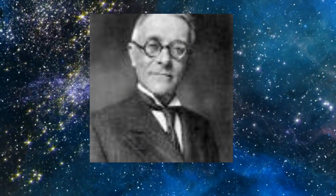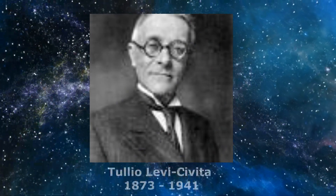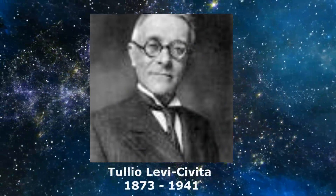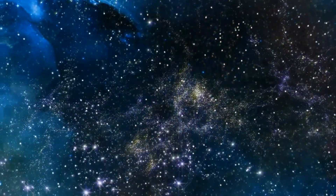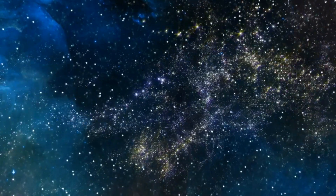In the 1920s, Willem De Sitter and Albert Einstein collaborated closely in Leiden to study the structure of space-time. Tullio Levi-Civita independently, and around the same time, found the properties of the newly discovered De Sitter Space.